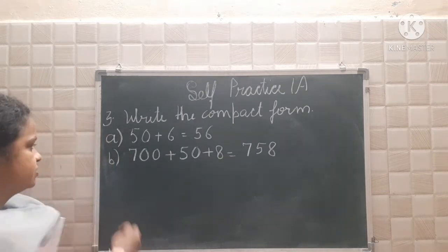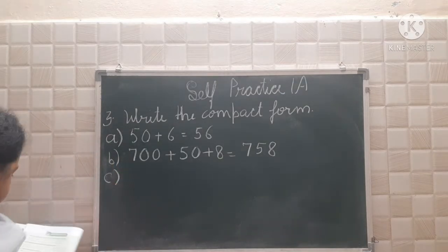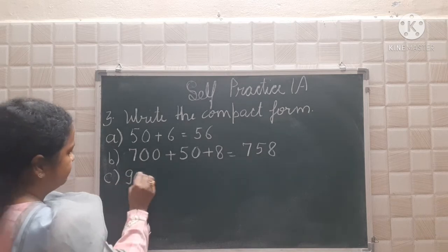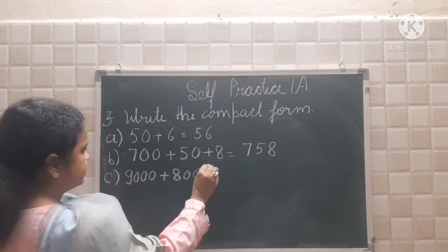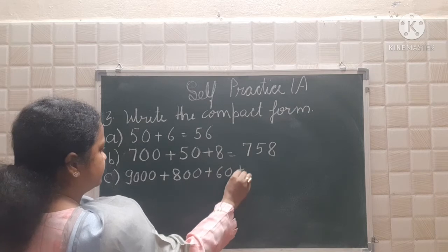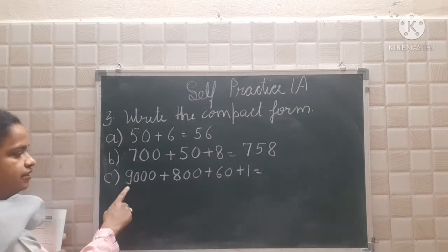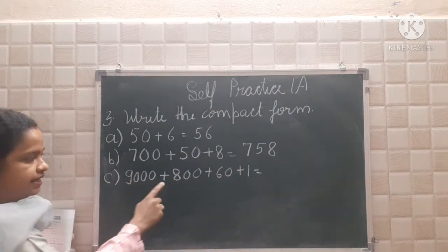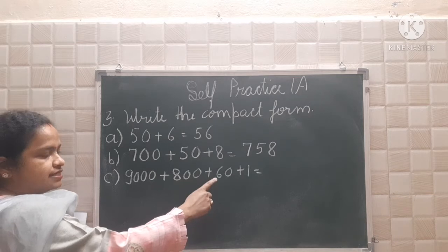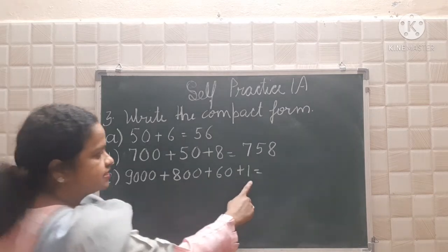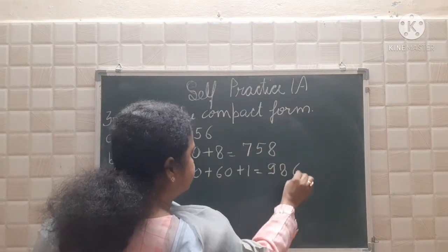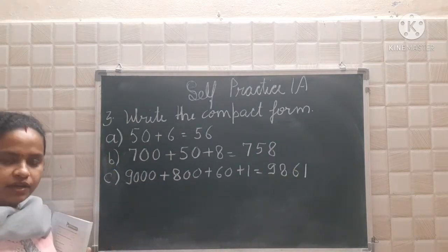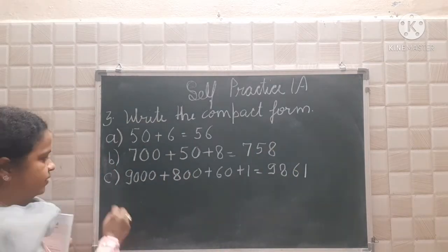758. Now see part C: 9000 plus 800 plus 60 plus 1. What will you get? 9 is at the thousands place, 8 is at the hundreds place, 60 is at the tens place, and 1 is at the ones place. So 9,861.